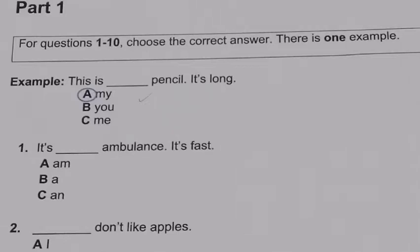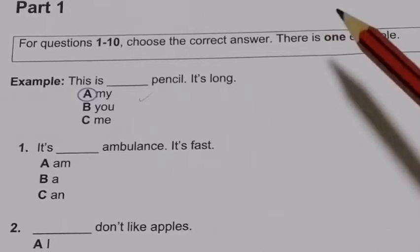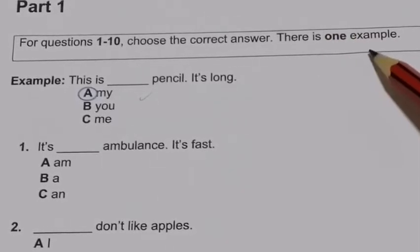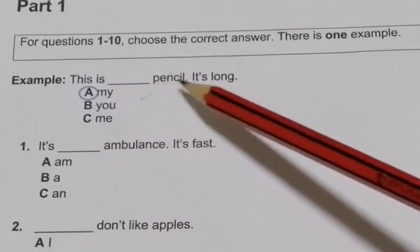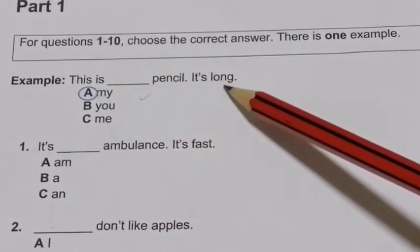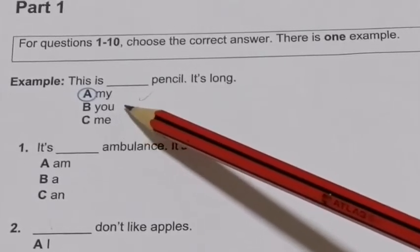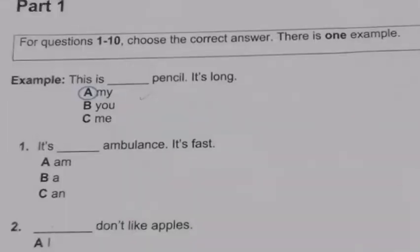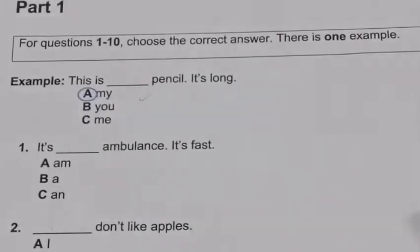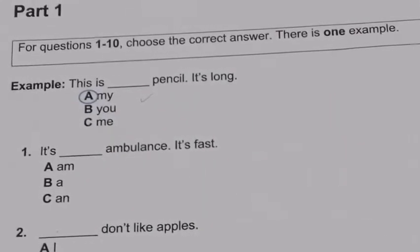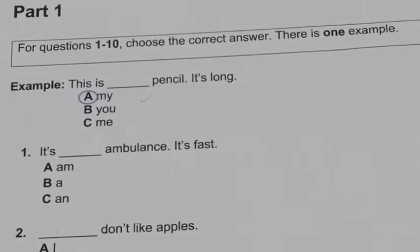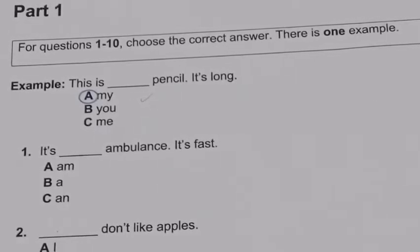Part 1 asks about grammar. For questions 1 to 10, choose the correct answer. For example: 'This is a ___ pencil, it's long.' The options are my, you, or me — I choose 'my.' Number 1: '___ ambulance, it's fast.' Like before, I need to choose here.